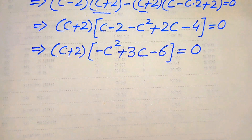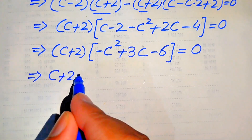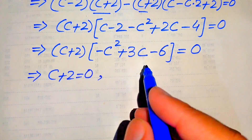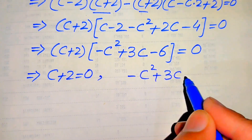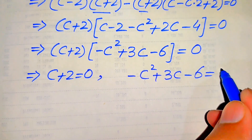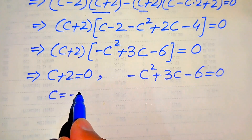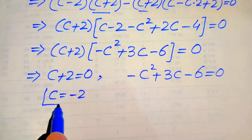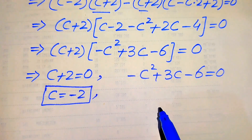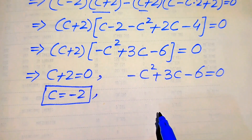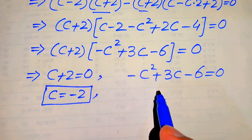We split this into two cases. Case 1: c plus 2 equals 0, giving the first root c equals minus 2. Case 2: minus c squared plus 3c minus 6 equals 0, which we need to solve to find the remaining roots.